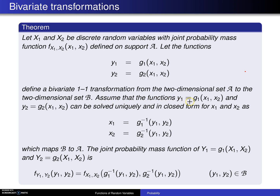Assume that the functions y1 equals g1 of x1, x2 and y2 equals g2 of x1, x2 can be solved uniquely and in closed form for x1 and x2 as x1 equals g1 inverse of y1, y2 and x2 equals g2 inverse of y1, y2. That maps the set script B back to script A.